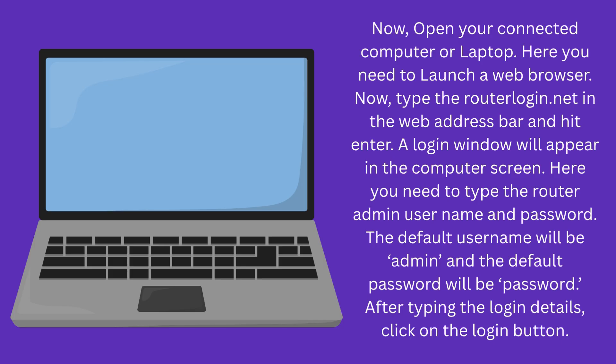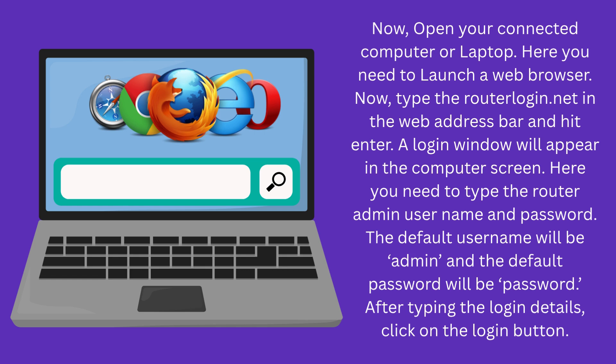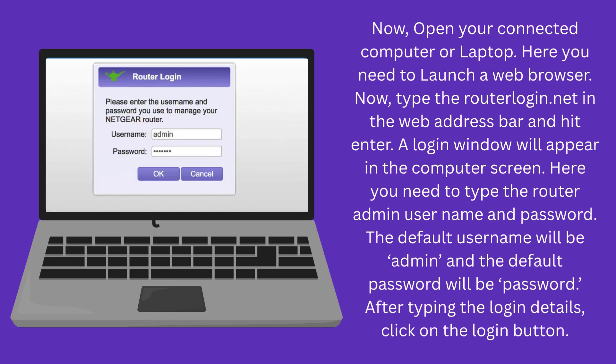Now, open your connected computer or laptop and launch a web browser. Type routerlogin.net in the web address bar and hit Enter. A login window will appear on the computer screen. Here you need to type the router admin username and password. The default username will be admin and the default password will be password. After typing the login details, click on the login button.